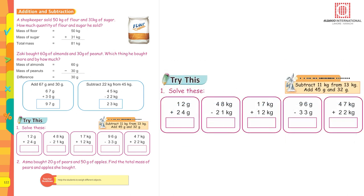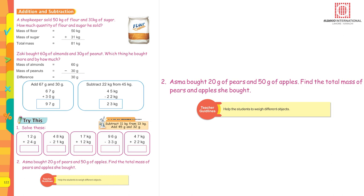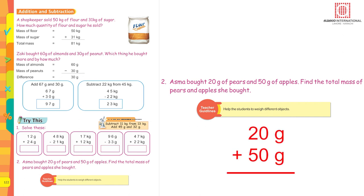For question number one, solve: 12 grams plus 24 grams. You know how to do addition and subtraction, so try the remaining sums independently. Asma bought 20 grams of pears and 50 grams of apples — find the total mass. Which operation do you pick? Yes, addition — add both weights together.